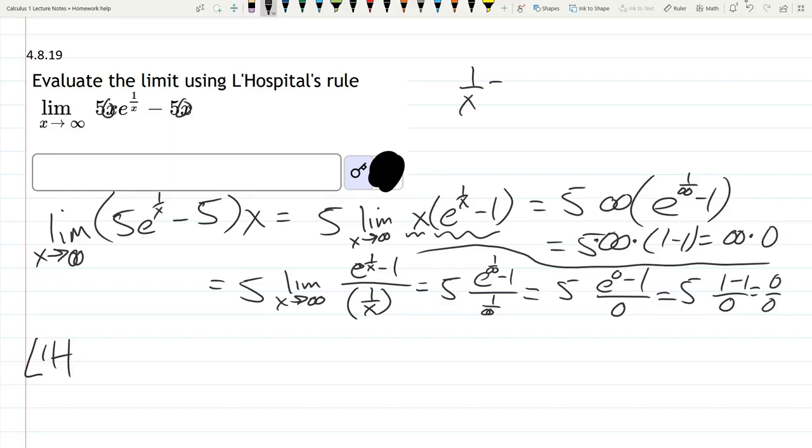Remember 1/x is x^(-1). And we take a derivative of this. We have -x^(-2), which is -1/x^2. All right, so L'Hospital's rule.